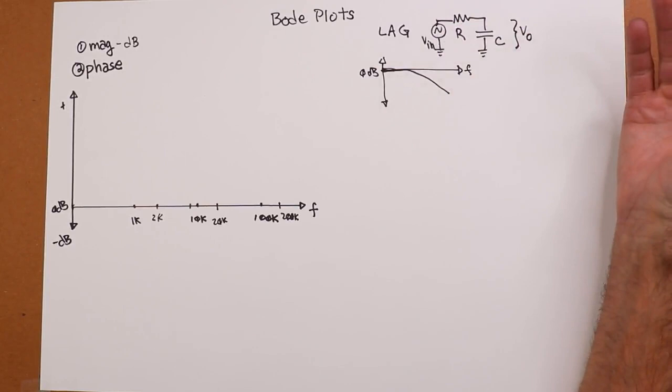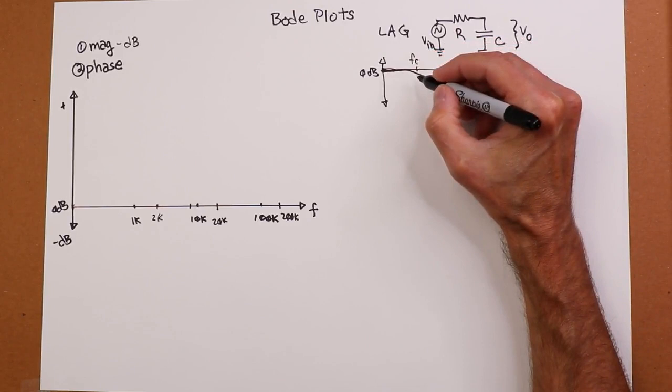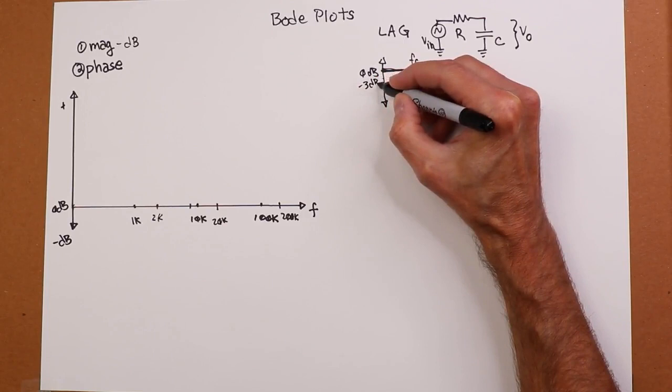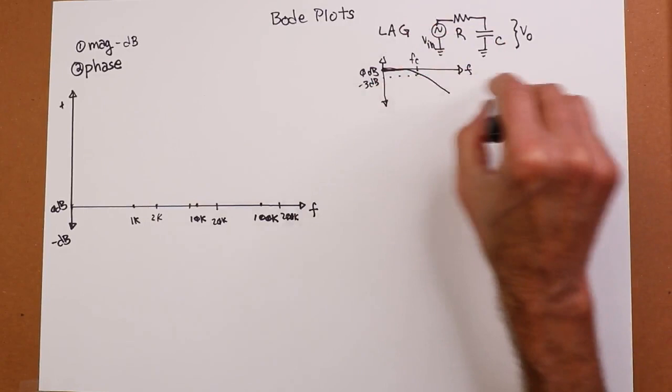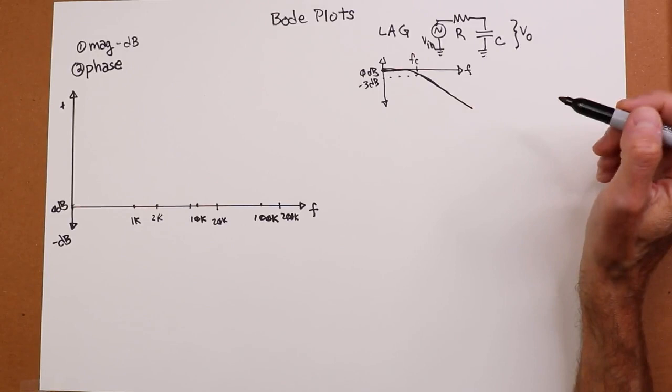Then at the critical frequency, remember the critical frequency is where x sub c magnitude equals r, and you'll be down at 0.707 of whatever your input is. That turns out to be a 3 dB drop. So there's your critical frequency. That's down 3 dB right there. And then it just continues to drop down. The higher the frequency, the smaller x sub c is, and the less signal we get.